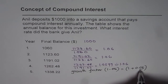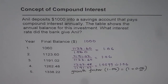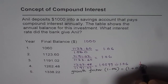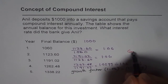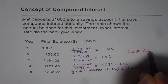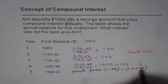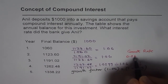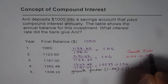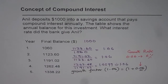What is the growth rate? 6%. From the growth factor, we get the growth rate. In decimals, it is 0.06, which is 6%. So we can say it is being compounded annually at the rate of 6%. That is how we can find the compound interest rate.